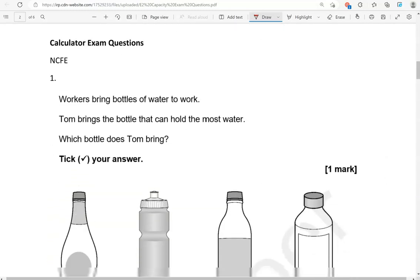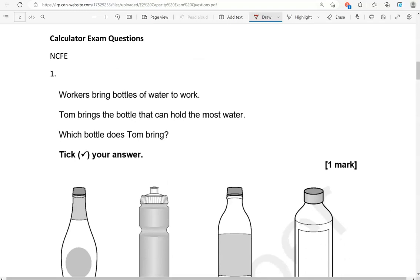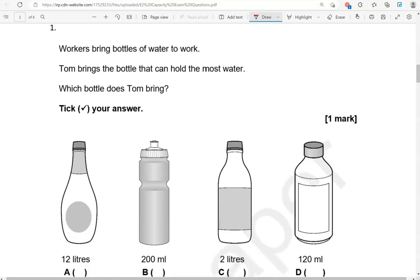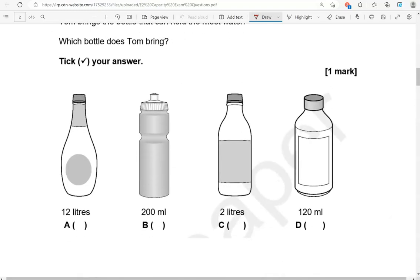And we'll move into the calculator questions. Workers bring bottles of water to work. Tom brings the bottle that can hold the most water. Which bottle does Tom bring? We've got a 12 liters, b 200 milliliters, c 2 liters, and d 120 milliliters.